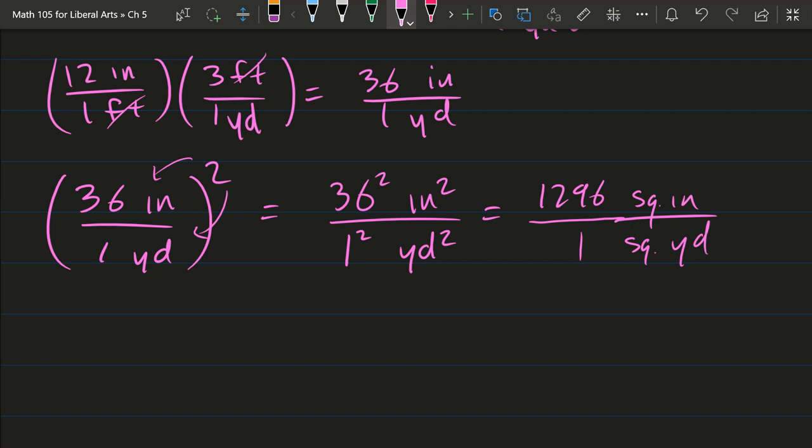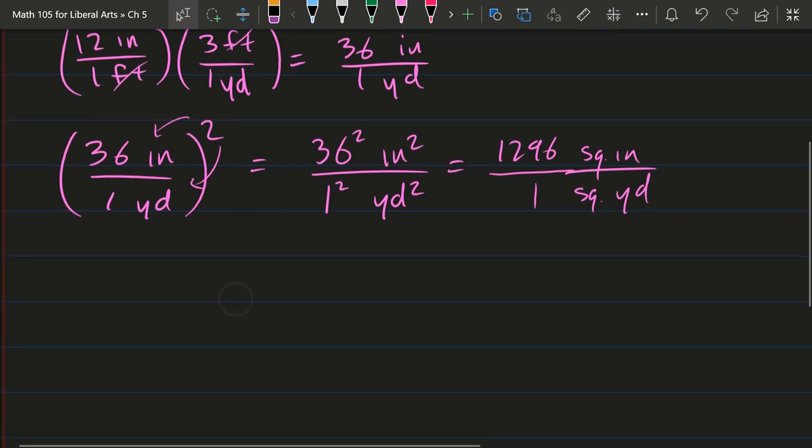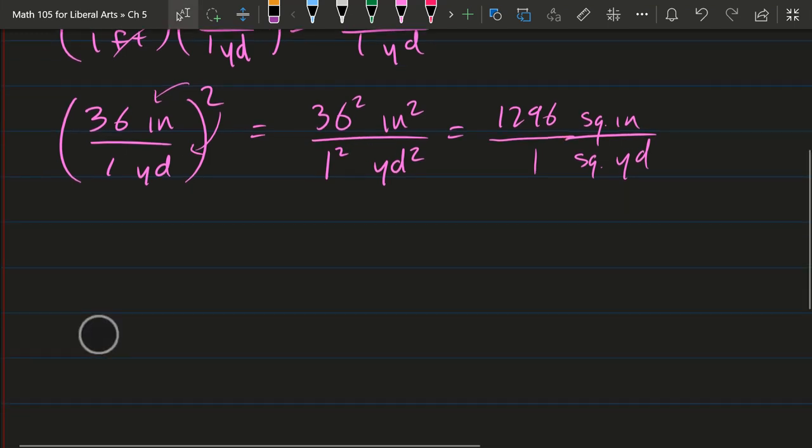Now it may seem like a lot, but remember if you drew out this grid, if you drew out a one yard by one yard grid and then drew a bunch of boxes, you would draw a lot of boxes. It would be 36 across, 36 down. I will not draw 36 across and 36 down because I don't have much time, but however many I'm drawing across and down, about eight and eight, there'll be about 64 in here total. That's why there are so many more square inches in a square yard compared to inches in yards.